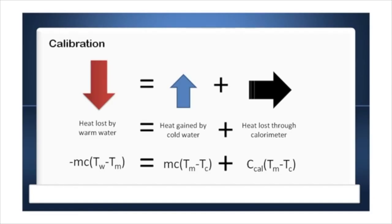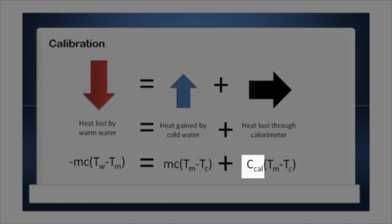This is done very easily using this calculation. We can say that the heat lost by the warm water is equal to the heat gained by the cold water plus the heat lost through the calorimeter. And knowing TC, TW, and TM, we can work out CCAL, the calorimeter constant.